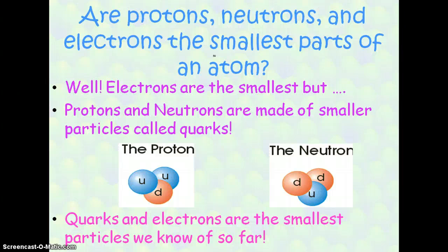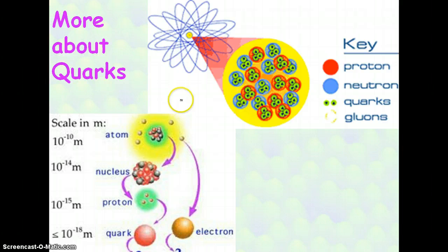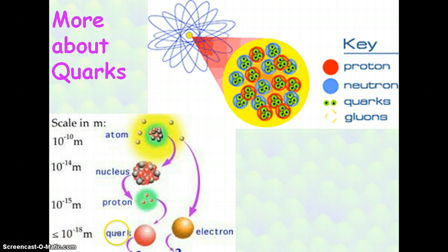Are protons, neutrons, and electrons the smallest parts of an atom? Electrons are the smallest, but protons and neutrons are actually made of smaller particles called quarks. Quarks and electrons are the same size, relatively, and they're the smallest particles we know of so far. When you're looking at a scale: an atom is 10 to the negative 10 meters; the nucleus is 10 to the negative 14 meters; a proton and a neutron are about 10 to the negative 15 meters; and quarks are 10 to the negative 18 meters, which is also the size of an electron. We haven't found anything smaller than that yet, but we might.